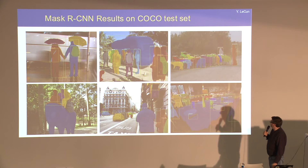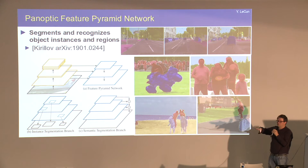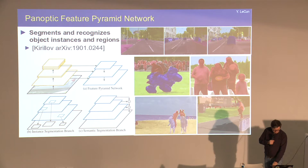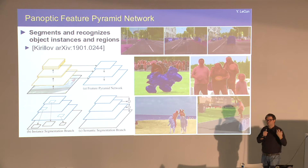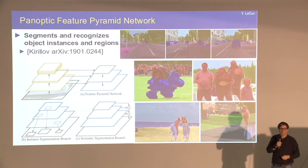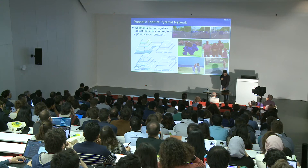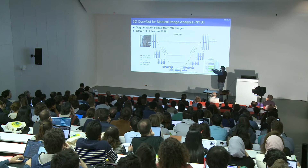Results from Mask R-CNN can outline every instance of every object with a box, where colors correspond to categories. Results from the feature pyramid network label not just objects but also background regions — this is called panoptic vision. These architectures — a convolutional net with decreasing resolution followed by one with increasing resolution, sometimes called a deconvolutional net — are used a lot in image segmentation, particularly for medical image analysis. Some people call this architecture a U-net because of its shape.